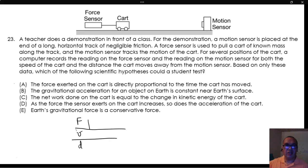Based on only this data, which of the following scientific hypotheses could the student test? Remember the data available is only mass, which was measured previously, force measured by the force sensor, and speed and distance measured by the motion sensor.